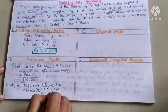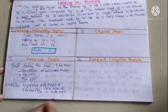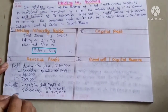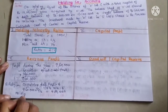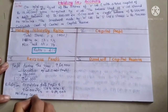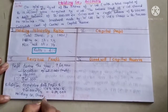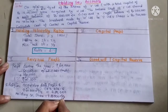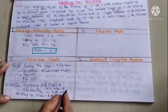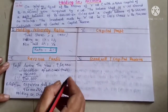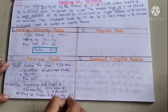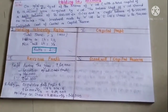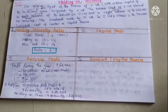So revenue profit is 4,80,000. Holding company share is 4,80,000 into 2 by 3, which equals 3,20,000. The remaining amount goes to minority holders.